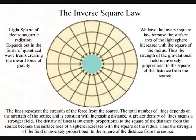We have the inverse square law because the surface area of the light sphere increases with the square of the radius. Thus the strength of the gravitational field is inversely proportional to the square of the distance from the source.